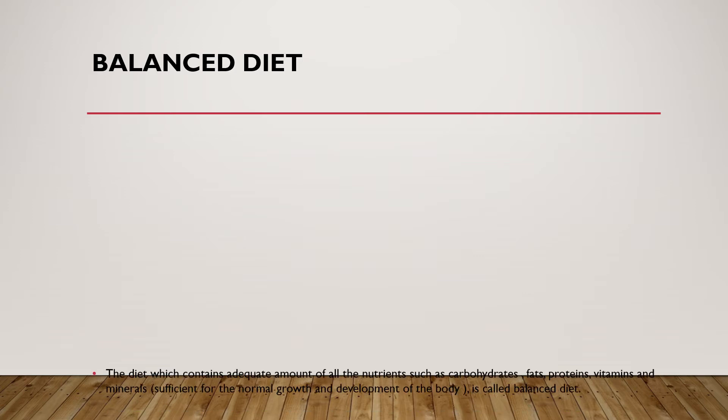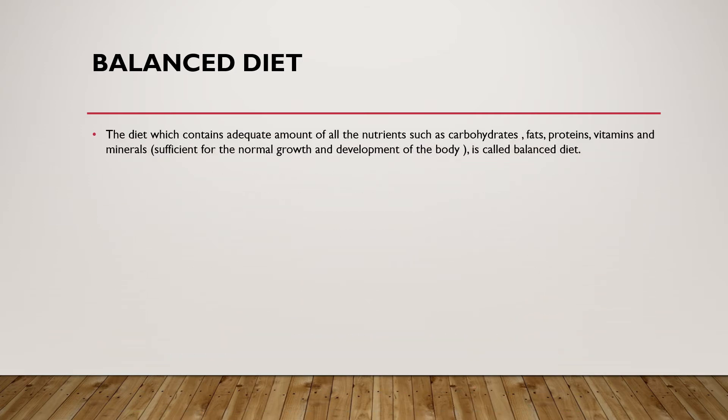Next, what is a balanced diet? The diet which contains an adequate amount of all the nutrients — such as carbohydrates, fats, proteins, vitamins, and minerals — and is sufficient for normal growth and development of the body is called a balanced diet. Whatever food we consume should contain these nutrients in proper proportion.